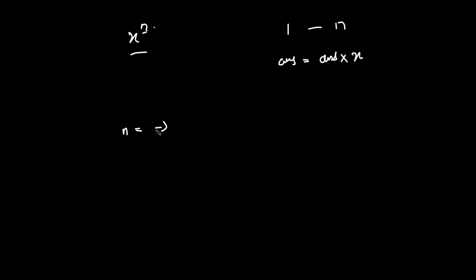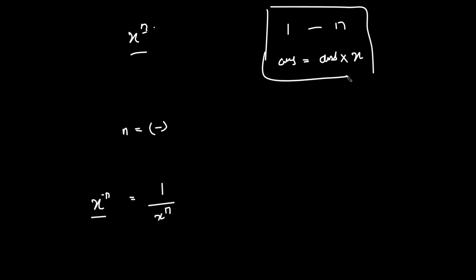If n is positive that works, but what if n is negative? You know that x to the power minus n equals 1 divided by x to the power n. So the brute force finds x to the power n, and then you just divide 1 by that answer to handle the negative case.